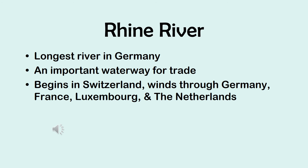If you look at the next slide, you'll see pictures of the Rhine River and some of the major cities along it. This is where you see that most of the major cities in Europe are located — along major riverways — because rivers are the source not only of water and food for agriculture, but also for trade as well.